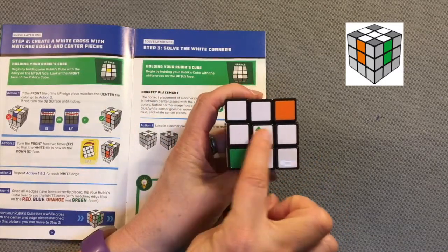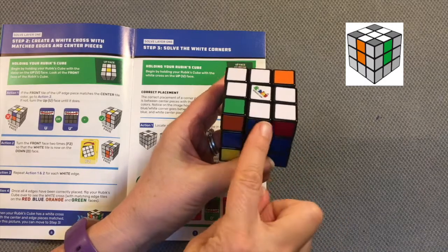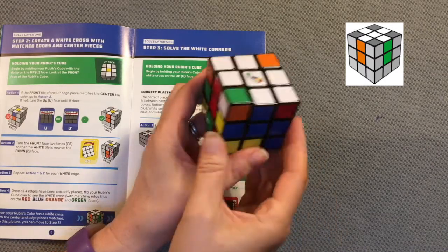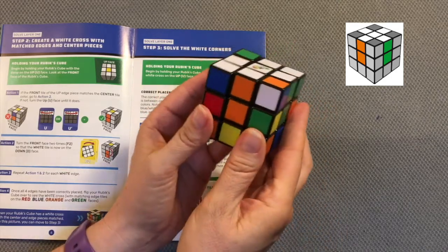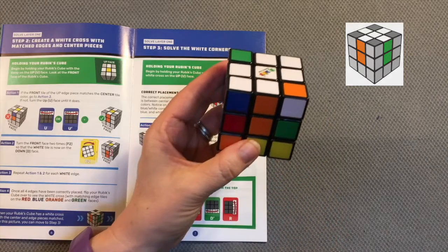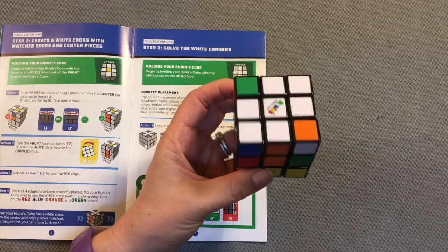Indeed, I have my white cross and I want to double check that I have the edge and centerpieces matching on each face. I can rotate around and see that I have successfully completed step two and I'm ready to move on to step three.